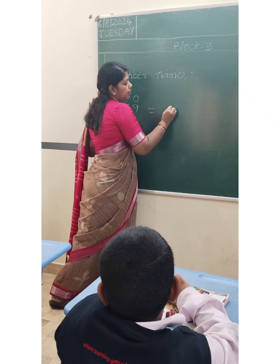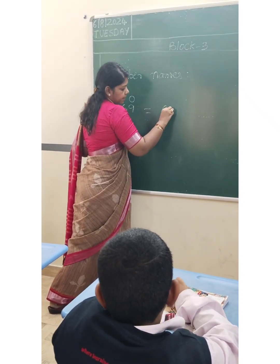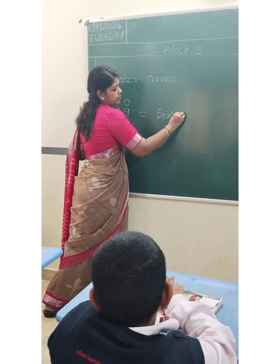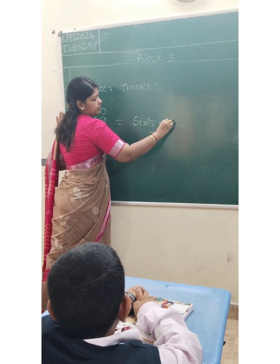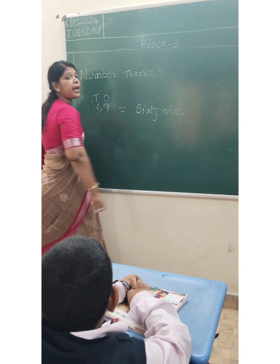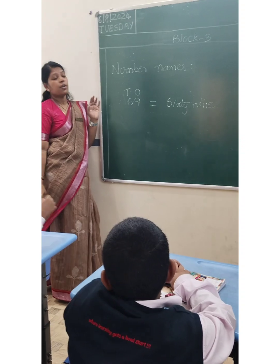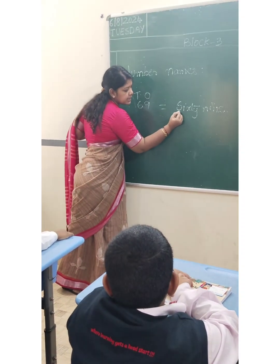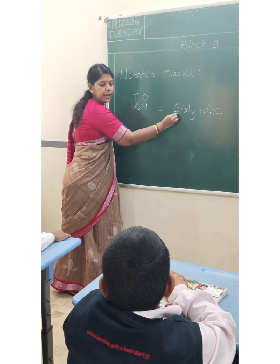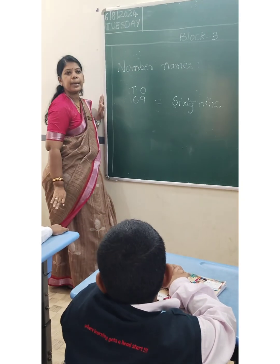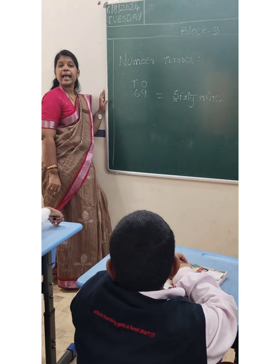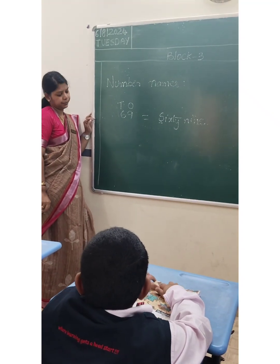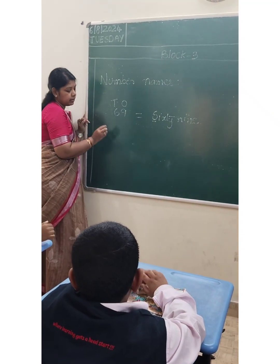You have to write sixty-nine in words. The number name is sixty-nine. Very good. When you are writing the number name, always your first letter should be a capital letter. Remember that — you have to keep it in your mind.